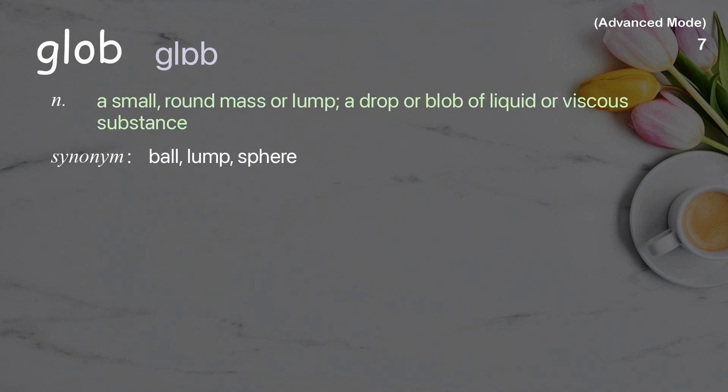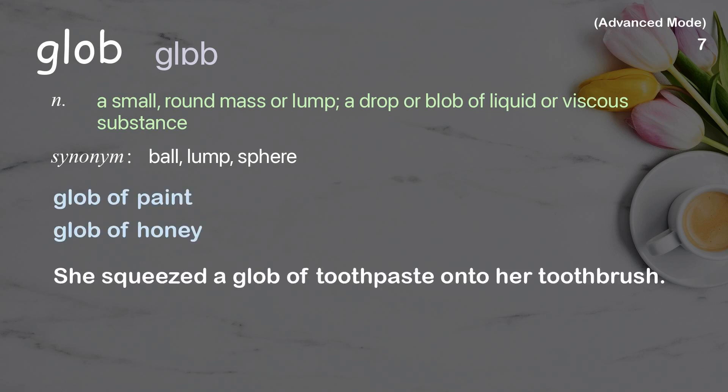Glob. A small, round mass or lump, a drop or blob of liquid or viscous substance. Examples: glob of paint, glob of honey. She squeezed a glob of toothpaste onto her toothbrush.